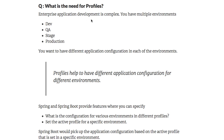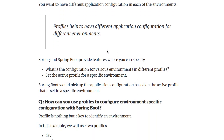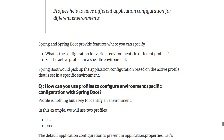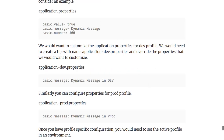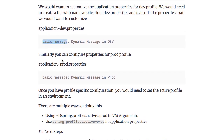What is the need for profiles? Enterprise application development is complex because you have multiple environments: dev, QA, stage, and production. You need different configuration for each environment, and that's where profiles come into picture — they help you provide different configuration for different environments. All you need to do is configure an environment variable specifying the active profile, and the configuration is picked up based on that profile. For example, if you have application-dev.properties and application-prod.properties, setting the profile to dev picks up the dev properties, and setting it to prod picks up the prod properties.